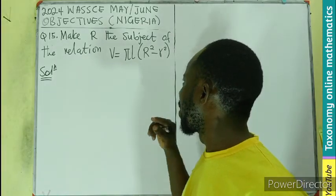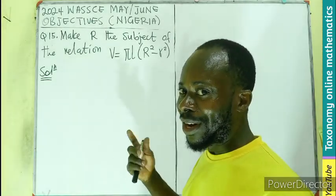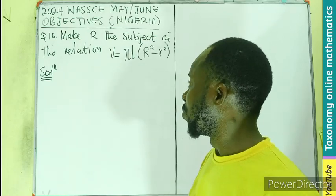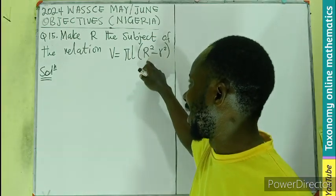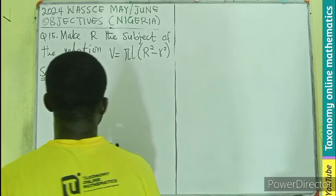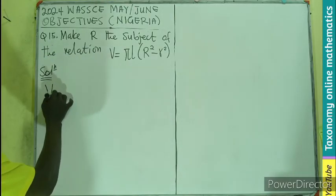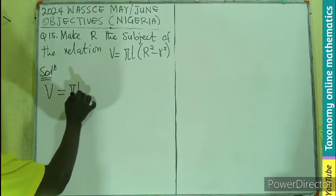Here the R capital is in the bracket, so we need to expand. First thing we need to expand that bracket, so V equals to π L.